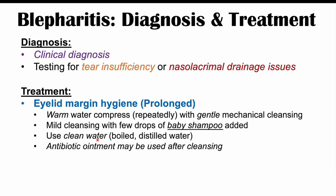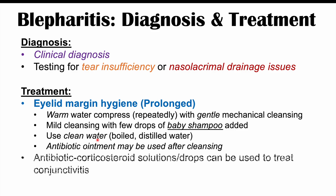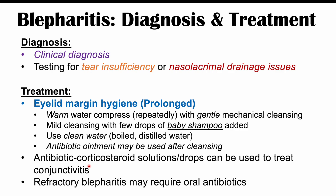After cleansing, antibiotic ointment may be applied. This is a prolonged and repetitive process of gentle eyelid cleansing with warm water and baby shampoo. In some cases antibiotic-corticosteroid solutions and drops may be used to treat any concurrent conjunctivitis. If eyelid margin hygiene fails after prolonged attempts and significant blepharitis persists — known as refractory blepharitis — oral antibiotics may be required.